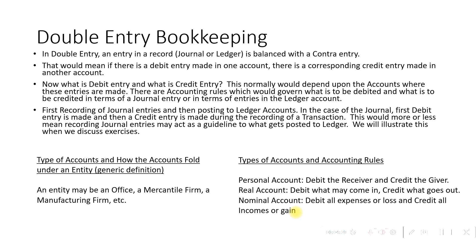A personal account may be any person's account; capital account is an example. Cash is a real account — debit what comes in, credit what goes out. So if an organization gets paid for services rendered, we debit the cash account as money comes in. If the organization pays money out, we credit the cash account as money is going out of the organization.